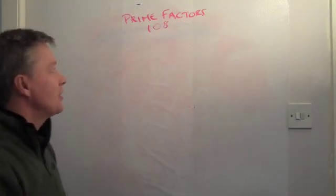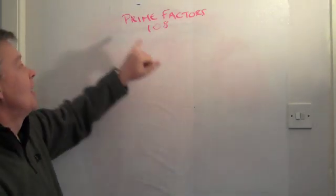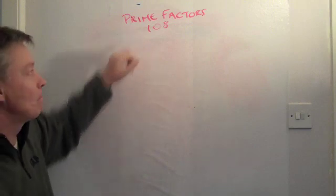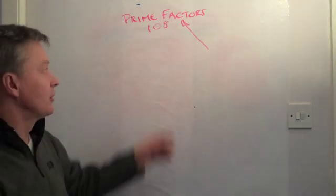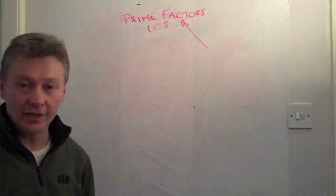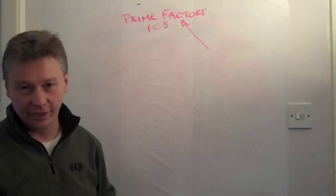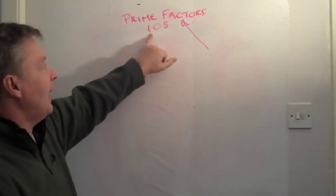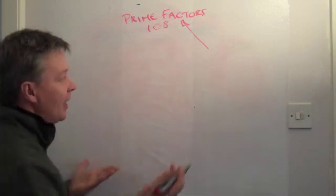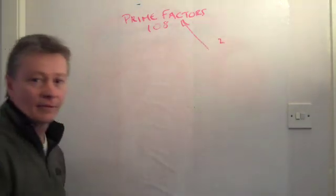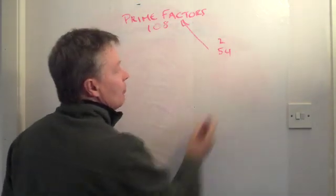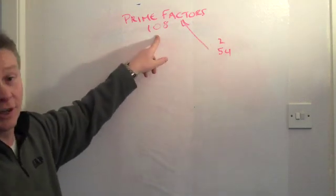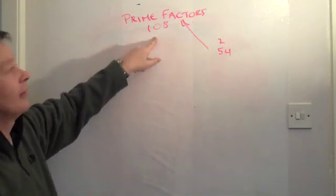The two things you need to know is what we mean by factors and what we mean by prime. Well factors are all the numbers that will divide into 108 neatly without leaving anything. So a typical factor of 108 would be say 2 or 54, because I can divide 2 into 108, I can divide 54 into 108.